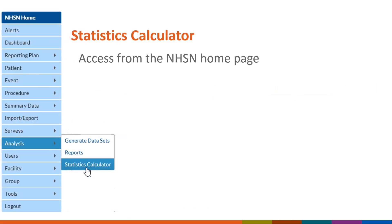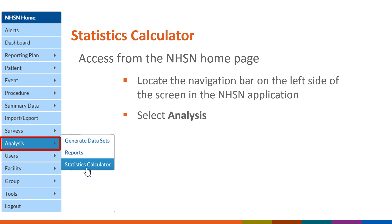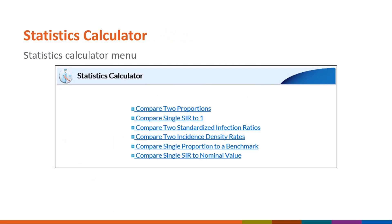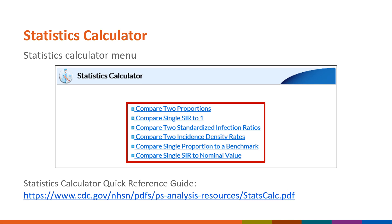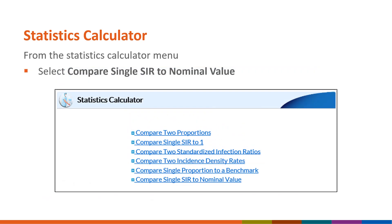The Statistics Calculator can be accessed within the NHSN application. Within the left navigation bar, select Analysis and then select Statistics Calculator. We then see 6 options for the Statistics Calculator. Information on how to use these options can be found in a Quick Reference Guide on the NHSN Analysis website. This link is also provided at the end of this QuickLearn. Since we are trying to compare our 2018 SIR to our target SIR, we select Compare Single SIR to Nominal Value.